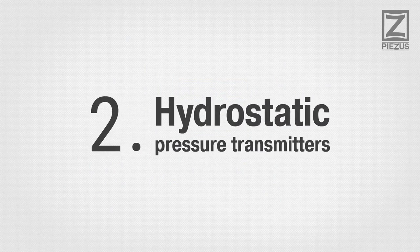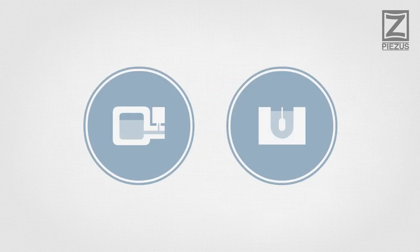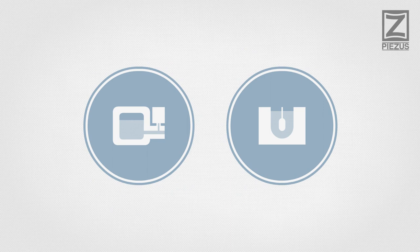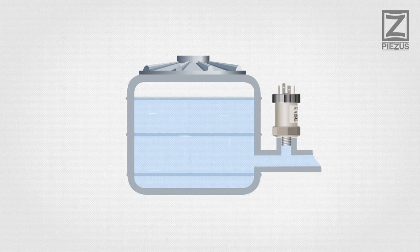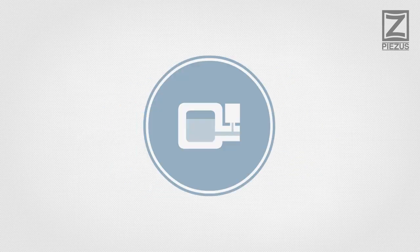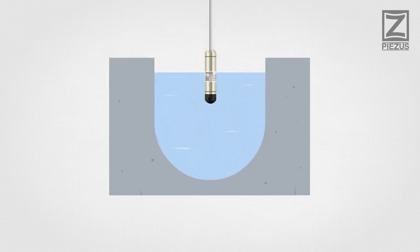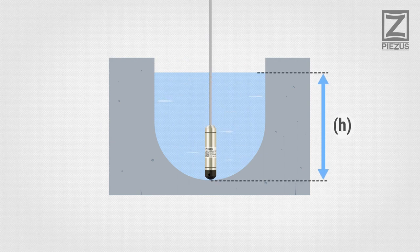Hydrostatic Pressure Transmitters. There are two options for hydrostatic level measurement: with a traditional pressure transmitter mounted outside of the vessel, or with a submersible pressure transmitter placed inside the vessel.